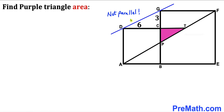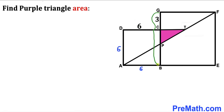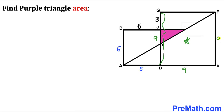Please keep in mind that line DG and line AF are not parallel. Since we are dealing with square ABCD, if this side length is 6, then all sides are 6 units. So this whole length is 6 plus 3, which gives us 9 units. Since we are dealing with square BEFG, all its side lengths are 9 units across the board.